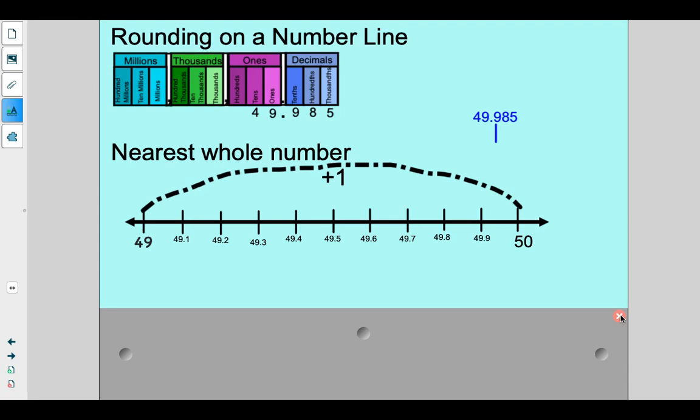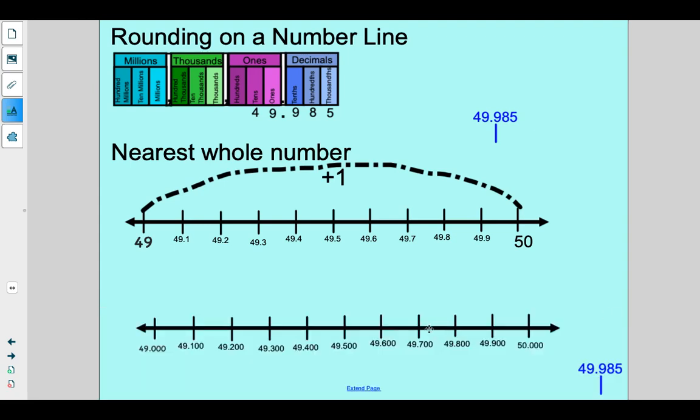So what I might do is I might actually rewrite these with place values all the way to the thousandths column. So this number line is the exact same as this number line. See how I have 49 and then just no thousandths, but I've put it so it's a little bit more friendly to see where this might go because this is all the way into the thousandths, right?